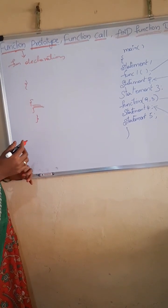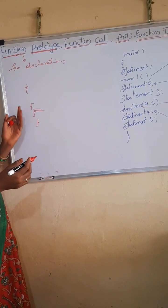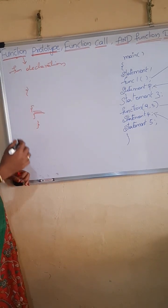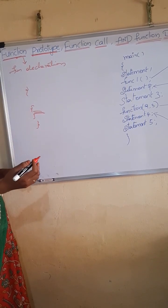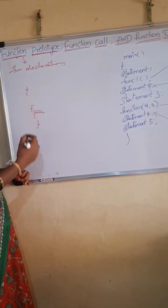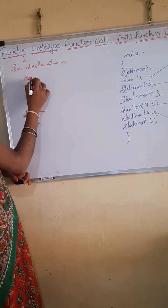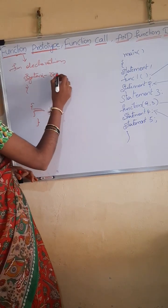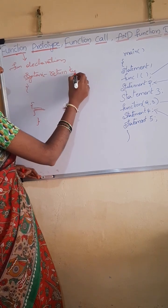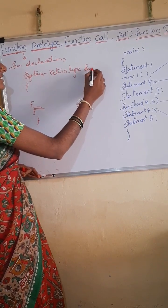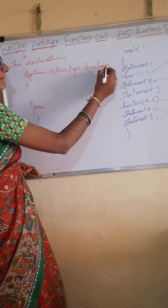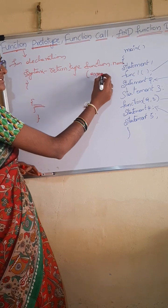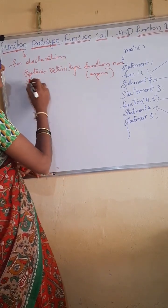In all C programs, functions will be written in the declared part — that is known as the function declaration. All C programs will declare and call the functions. The syntax of the function prototype is: type, function name, and arguments. The argument list is also known as the parameter list. This is the syntax.